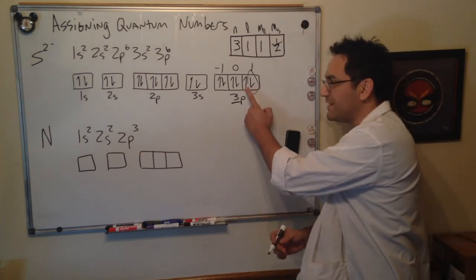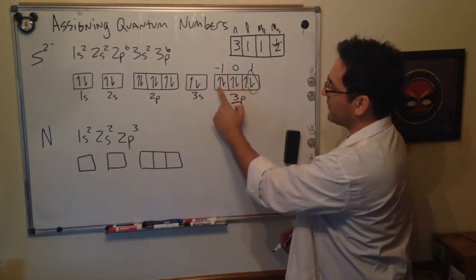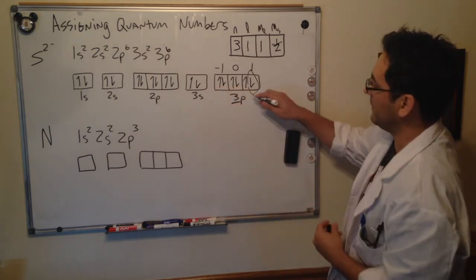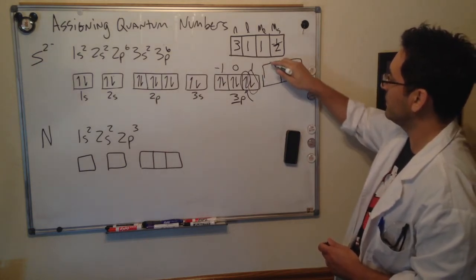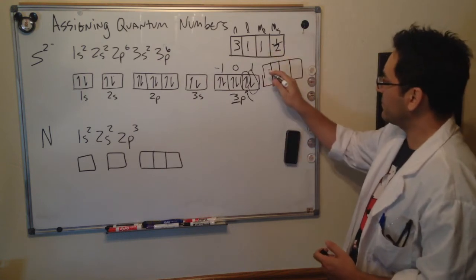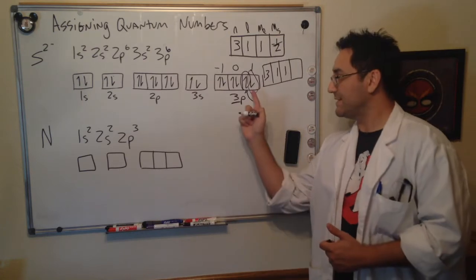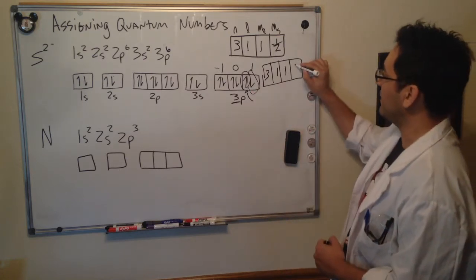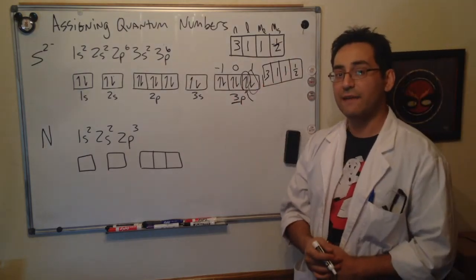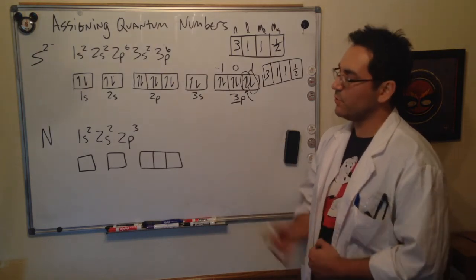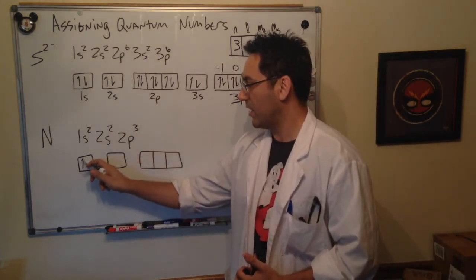Now let's say that we were interested in the third up electron. We would write an almost identical set of quantum numbers for this electron. We would say n is three, l is one, ml is one, but the difference here is that it is the up electron so it would get a one half instead of a minus one half. So you can see no two electrons are ever going to have the same exact four quantum numbers.